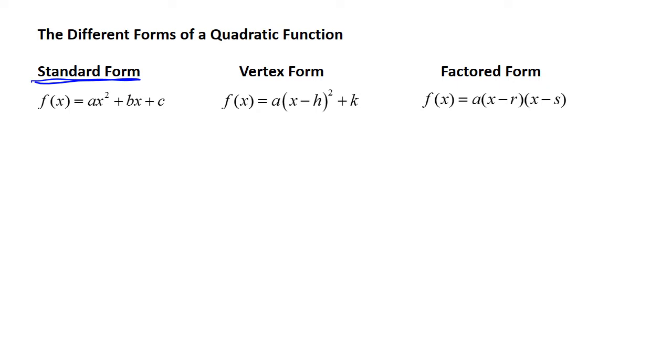where you have an x squared term, an x term, and a constant, and vertex form, where you can see the vertex from the h and the k.